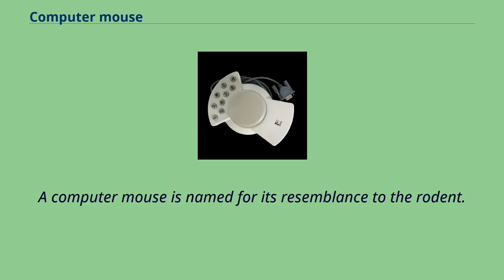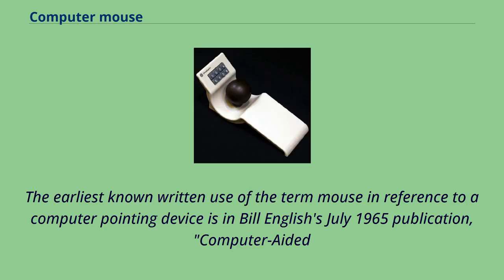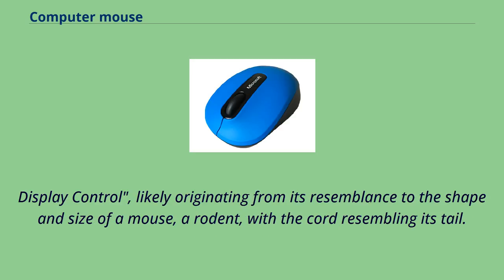A computer mouse is named for its resemblance to the rodent. The earliest known written use of the term mouse in reference to a computer pointing device is in Bill English's July 1965 publication, likely originating from its resemblance to the shape and size of a mouse — a rodent — with the cord resembling its tail.